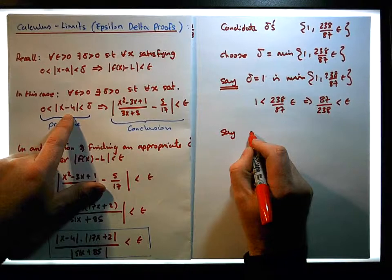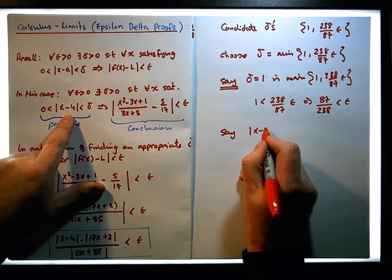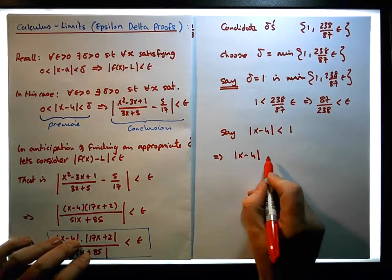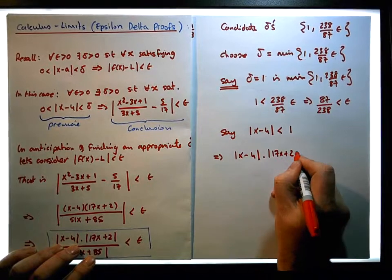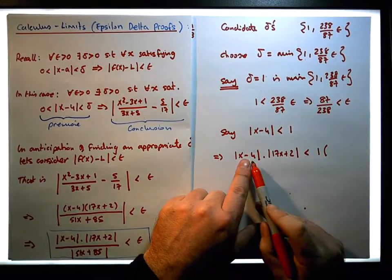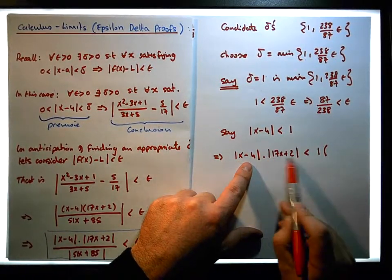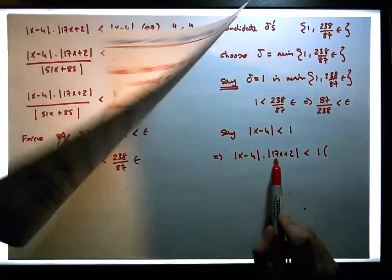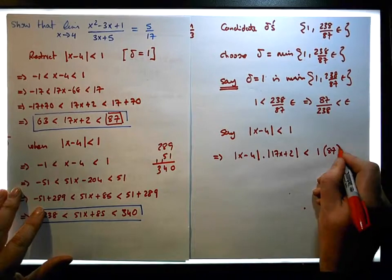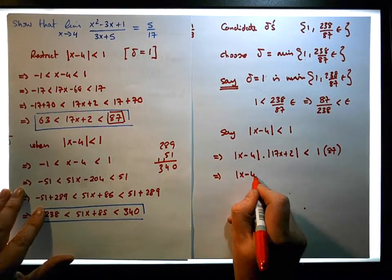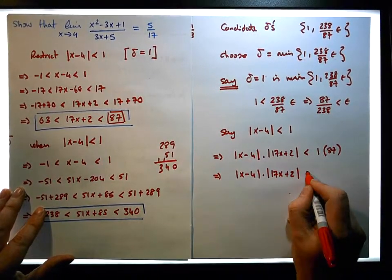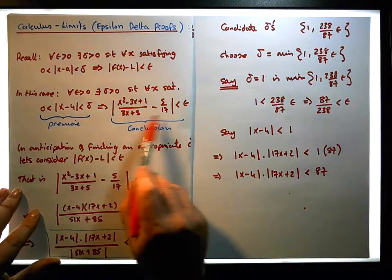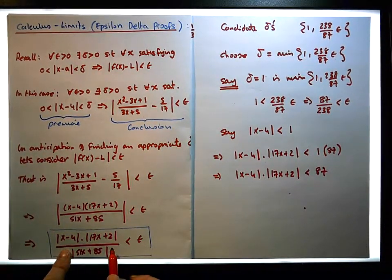So let's say that x minus 4 is in fact less than 1. Well, what does this imply? This implies that x minus 4 times 17x plus 2 must be less than 1 times this number. If I multiply by a number that's bigger than 17x plus 2, then what we know is that this will be less than it. And we know that number — what number is bigger than 17x plus 2? It's 87. So this implies that x minus 4 times the absolute value of 17x plus 2 must be less than 87. And now we want to infer this particular conclusion — dividing through by the absolute value of 51x plus 85.